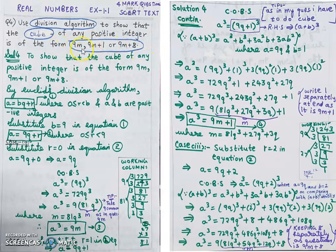These three forms can be compared to bq plus r with r = 0, 1, and 8 respectively — which means b is 9. So substitute b = 9 into Euclid's division algorithm equation, giving a = 9q plus r.